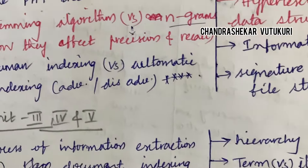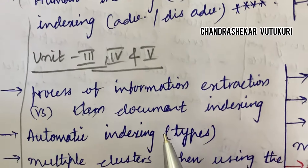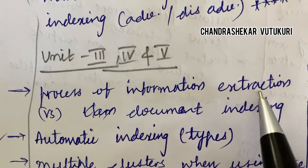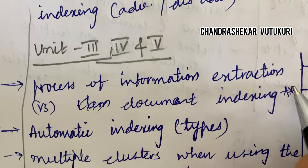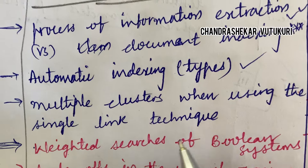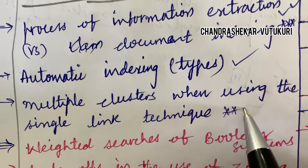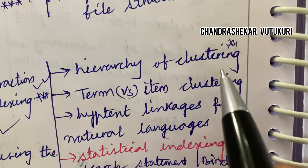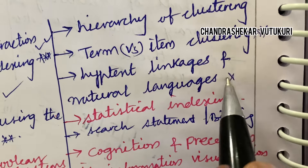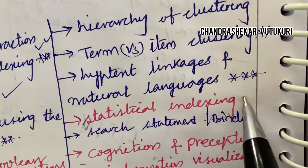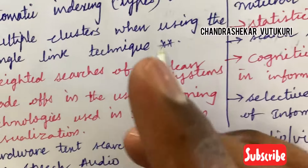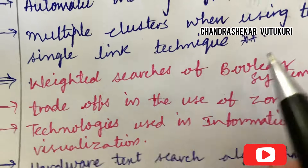For Units 3, 4 and 5, the process of information extraction versus document indexing is a topmost question. Automatic indexing and its types is a short question. Multiple clusters using the single linkage technique and explaining the hierarchy of clustering is a short question. Term versus item cluster may be a long question. Hypertext linkages and natural languages, differences between statistical indexing, search statement and binding — these are all possible short questions.